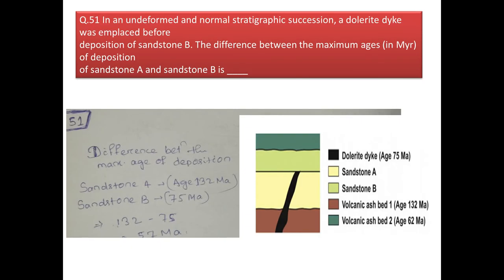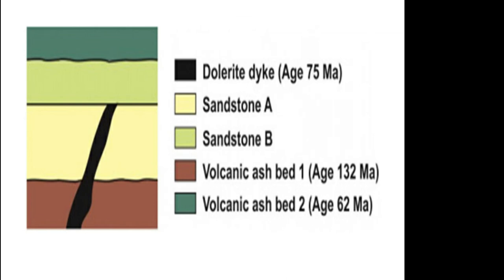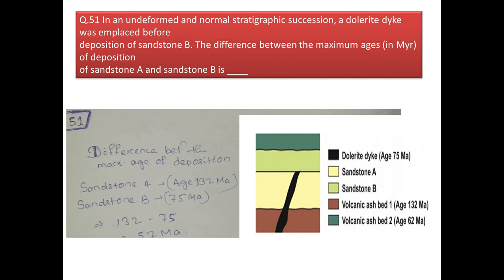Next question: in an undeformed normal stratigraphic succession, a dolerite dyke was intruded before deposition of sandstone B, and the difference between the maximum ages of sandstone A and sandstone B is? Sandstone B is present over volcanic ash of age 132 Ma, so the maximum age of sandstone B is 132 Ma. Sandstone A is deposited just after the intrusion of the dolerite dyke, giving a maximum age of 75 Ma. The difference is 132 − 75 = 57 million years.